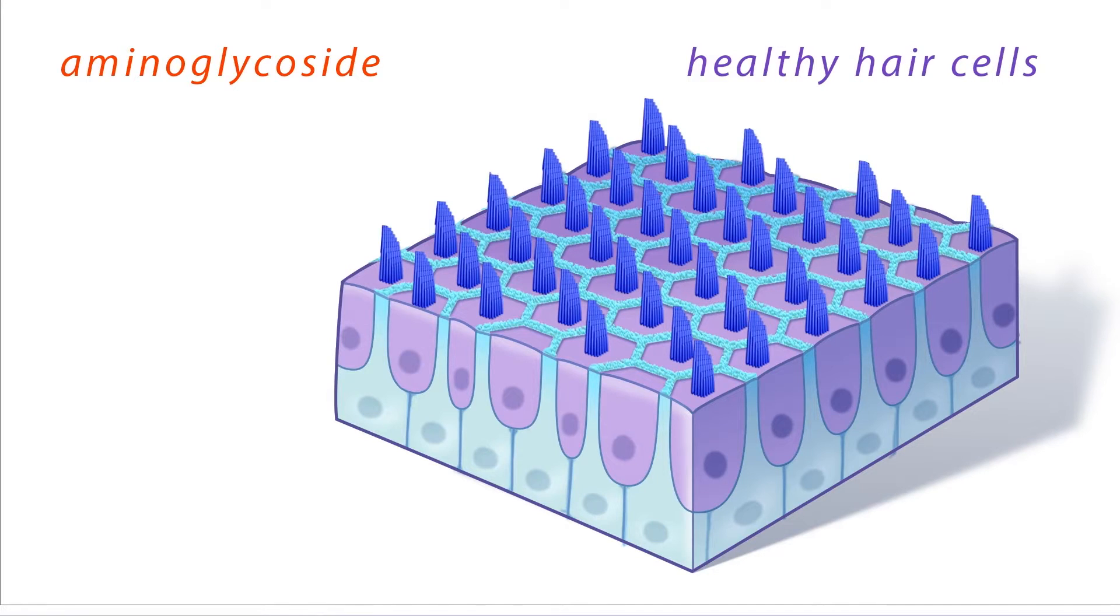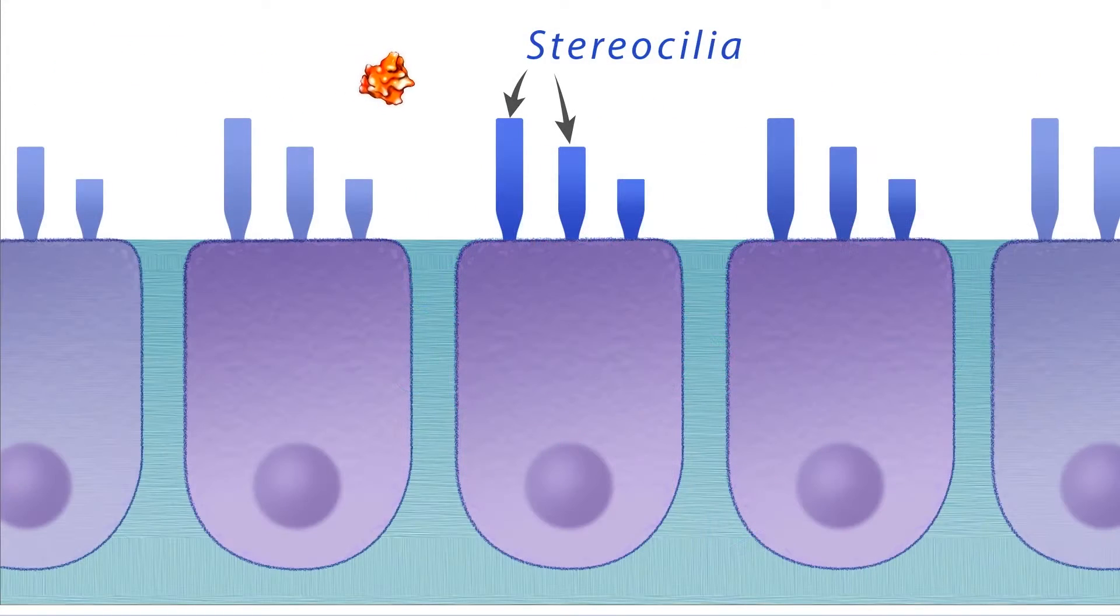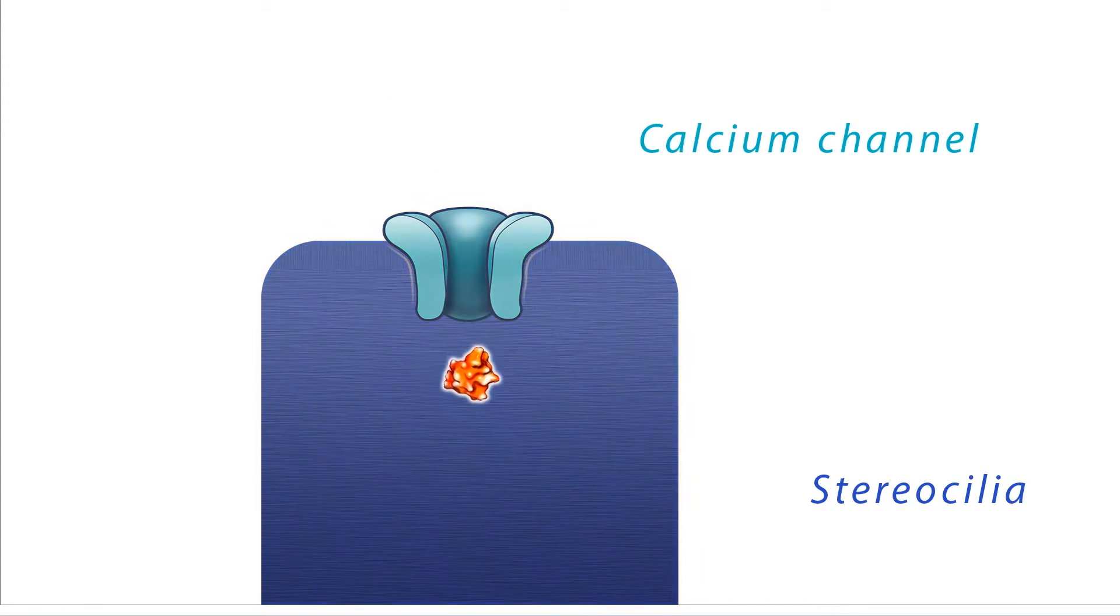In doing those experiments, what we found was that the aminoglycosides don't just block the channel, but they actually go through the channel. So it looks like a cork in the bottle kind of thing, but it's not.